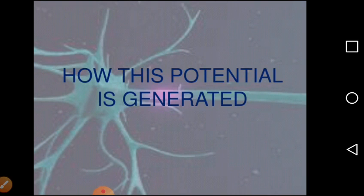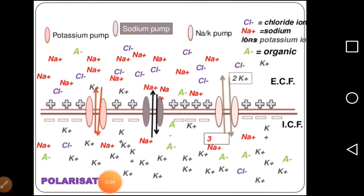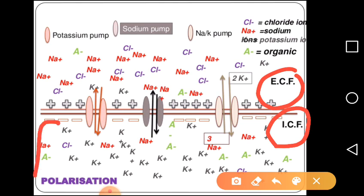To understand action potential, it is important to understand how the potential is maintained across the membrane. Here you can see the ECF — extracellular fluid — and the ICF — intracellular fluid, or inside the cell. This part is inside the cell and the other part is outside the cell. There are three types of channels.